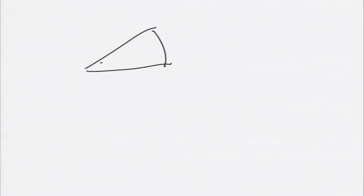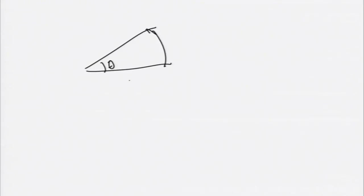Let us first go to the definition of ordinary angle. Remember — supposing this angle is θ. Angle is a dimensionless quantity; you may measure it in degrees or radians, but it has no dimension. Suppose this length is L and this is R. Then L is given by R times θ — this is your definition of ordinary angle, where θ is in radians. What we do is: take a curve perpendicular to two radial lines, and divide the arc length between those two points by R to get angle θ.